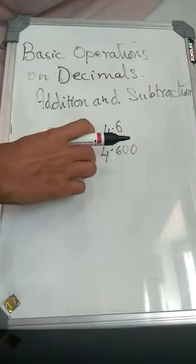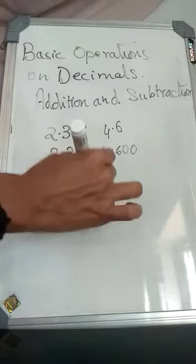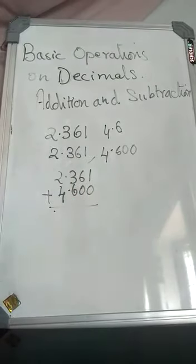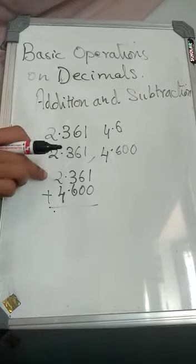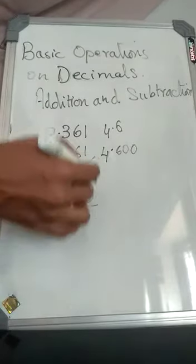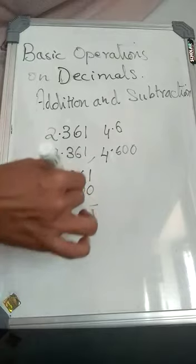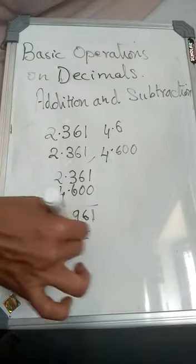You will arrange them vertically — write one number and the other just below it for addition. Then add or subtract the decimals by treating them as ordinary numbers, carrying to the next number just like with whole numbers. For example, if you are adding, you will get: one plus zero is one, six plus zero is six, three plus six is nine, and two plus four is six. So that will be the final answer.